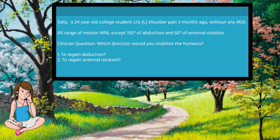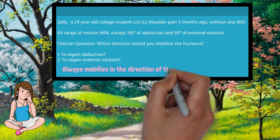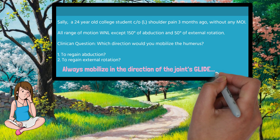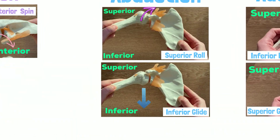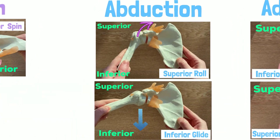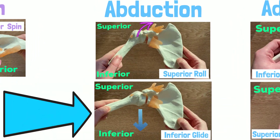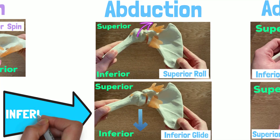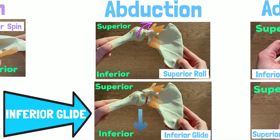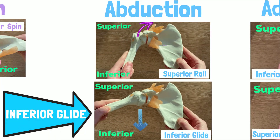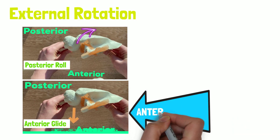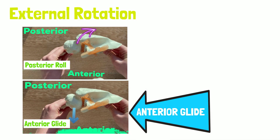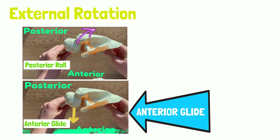Okay, let's answer this. Remember, you always mobilize in the direction of the joint's glide. So, if you wanted to regain abduction movement, you need to mobilize the humerus inferior. If you wanted to regain external rotation movement, you need to mobilize the humerus anteriorly.